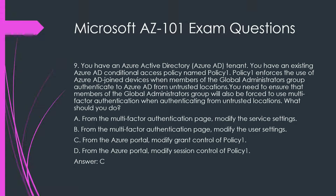Question 9. You have an Azure Active Directory tenant and an existing Azure AD Conditional Access Policy named Policy 1. Policy 1 enforces the use of Azure AD joined devices when members of the Global Administrators Group authenticate to Azure AD from untrusted locations. You need to ensure that members of the Global Administrators Group will also be forced to use multi-factor authentication when authenticating from untrusted locations. What should you do?